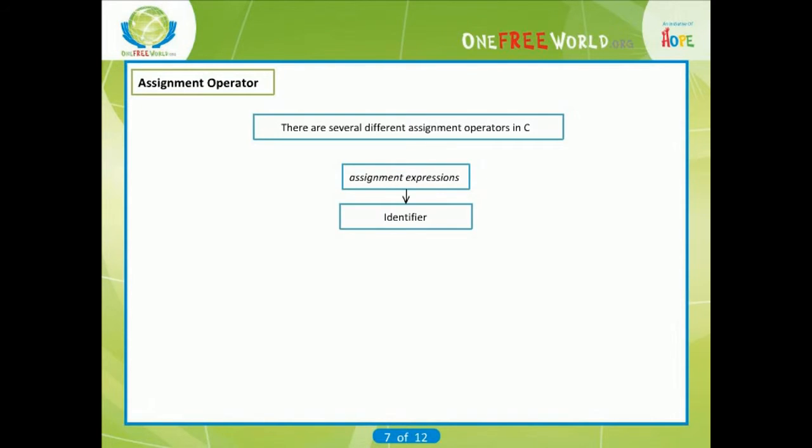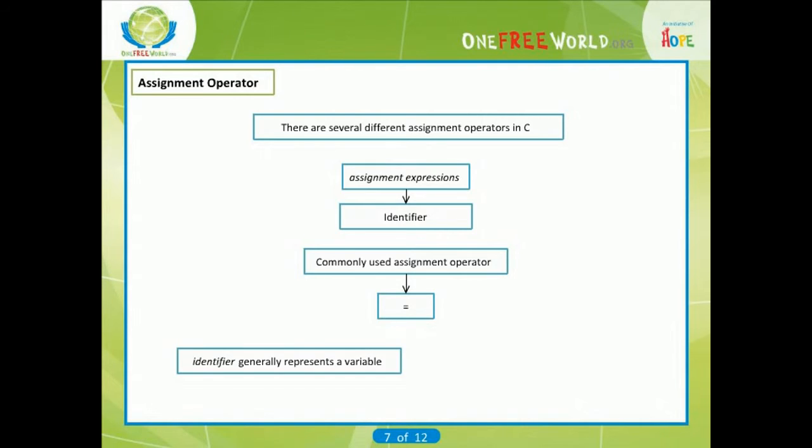Assignment operator. There are several different assignment operators in C, all of them are used to form assignment expressions, which assign the value of an expression to an identifier. The most commonly used assignment operator is equals. Assignment expressions that make use of this operator are written in the form: identifier = expression. Where identifier generally represents a variable, and expression represents a constant, a variable, or a more complex expression.